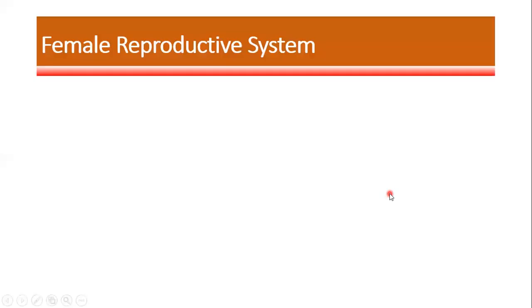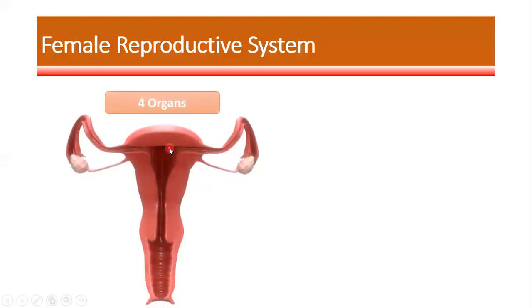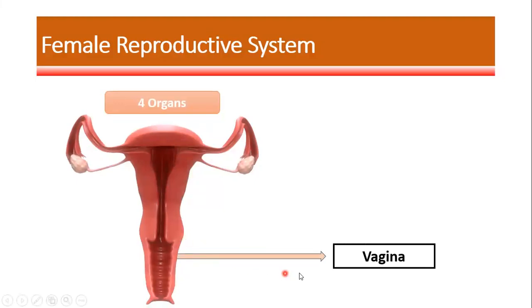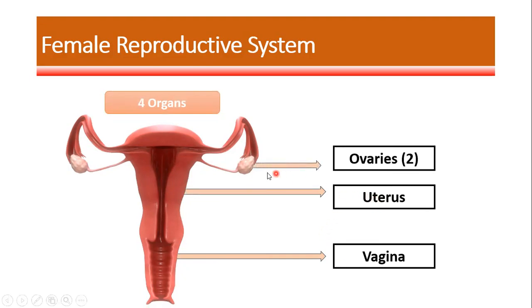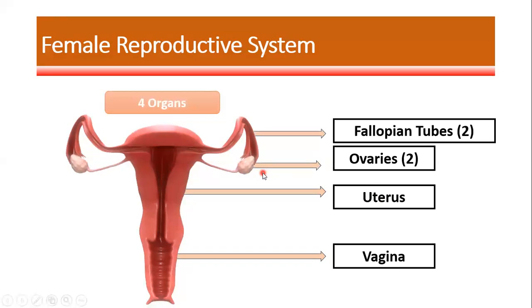Hello friends, welcome back to my channel Medical Simple by Hardik Shah. Today we will have a discussion on the female reproductive system. The female reproductive system is majorly comprised of four organs. The lowest organ is known as the vagina, following which there is the uterus, followed by two ovaries and two fallopian tubes. Let us understand each organ one by one.